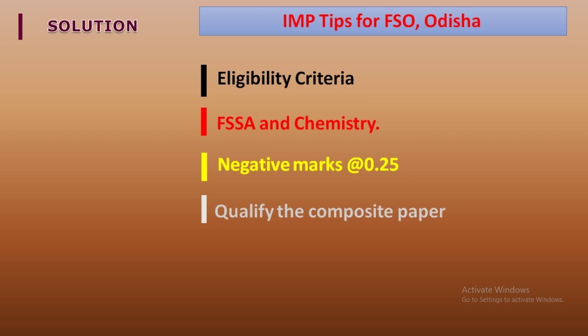In the technical section, focus on accuracy. Even scoring 60-70 percent can be sufficient if your accuracy is good. After that, for the computer skill test, the MSCIT book or any computer book will serve the purpose. Make sure your documents are in order, as you upload them while filling the form.